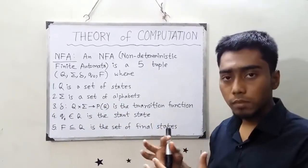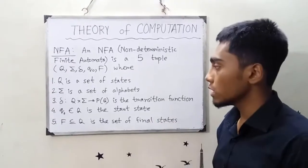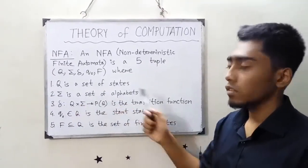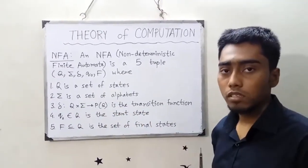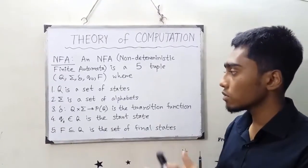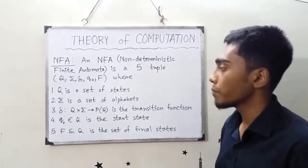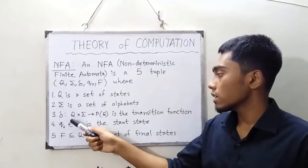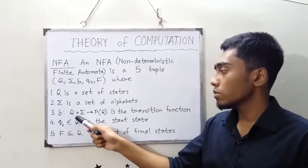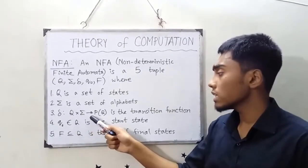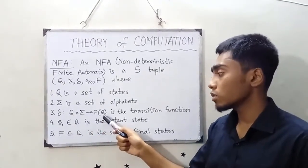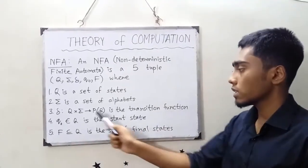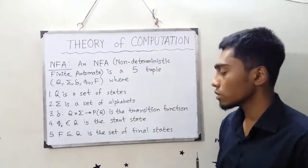Sigma is a set of alphabets — it is the input alphabet set. Delta is the transition function, such that Q into sigma implies the power set of Q. So it is the transition function.